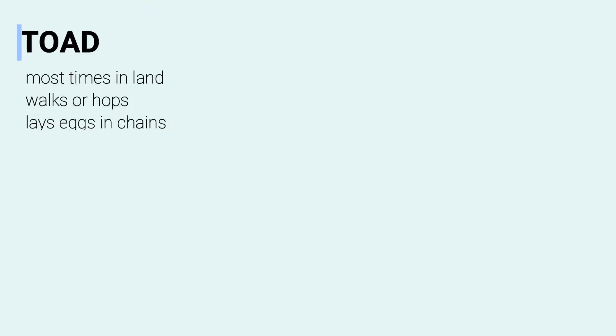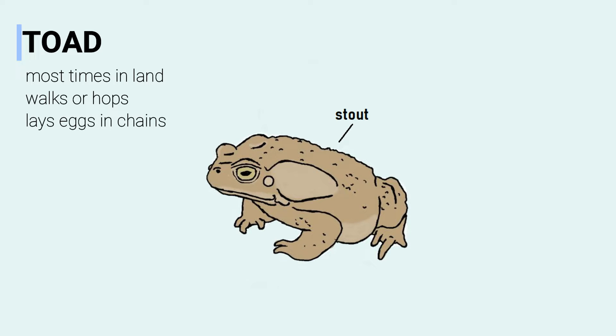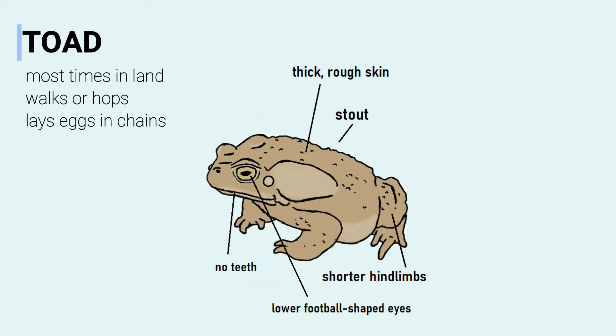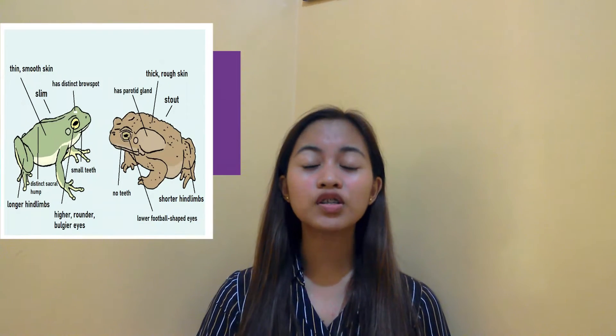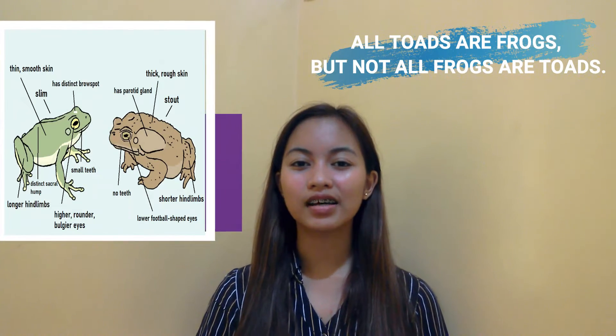Toads, however, most of the time live on land. They prefer walking or doing small hops. Female toads lay eggs in chains. They have a stout body type, their skin is thick and rough, they have shorter hind legs, lower football-shaped eyes, no teeth, and a parotid gland. However, frogs are quite general — toads fall in the frog category. Thus, all toads are frogs, but not all frogs are toads.